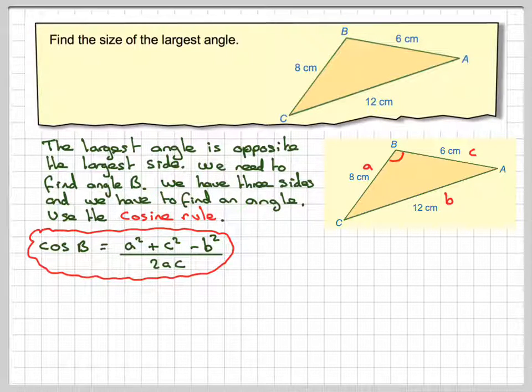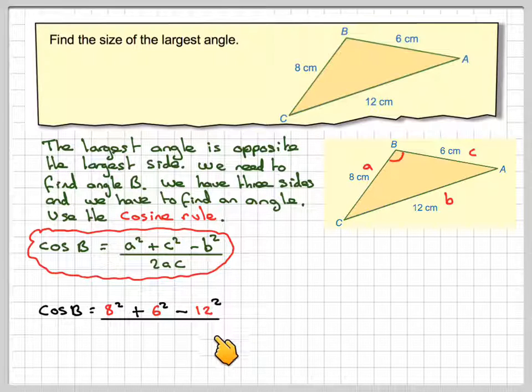Right, then substituting in the numbers. So cos B will be 8 squared, which is A, plus 6 squared, which is C, minus B squared, which is 12 squared, divided by 2 times 8 times 6.